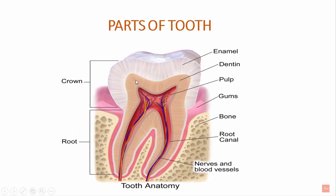Enamel is the hardest substance in the human body, consisting of more than 96% of inorganic material. The second layer is the dentine — it is the major bulk of the tooth, present in both crown and root. Cementum is the hard avascular tissue that covers the root portion. And the pulp is the connective tissue that carries blood and nerve supply to the tooth.